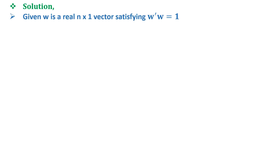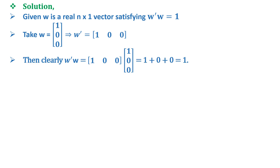Now let us solve the question. It is given that w is a real n×1 vector satisfying w'w = 1. So let us take w as a 3×1 vector: [1, 0, 0]'. This implies w' = [1, 0, 0] as a 1×3 matrix, and w'w = 1.